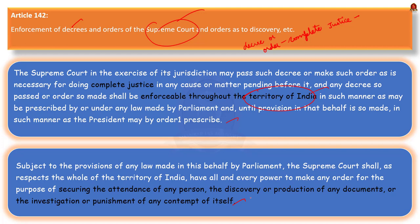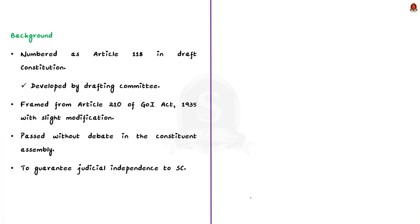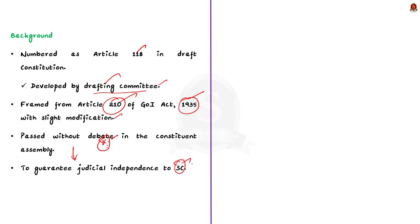Now let us learn the background of the extraordinary power of the Supreme Court. Article 142 was originally numbered as Article 118 in the Draft Constitution developed by the Drafting Committee. It was framed from Article 210 of the Government of India Act 1935 with a slight modification, and it was passed without debate in the Constituent Assembly.